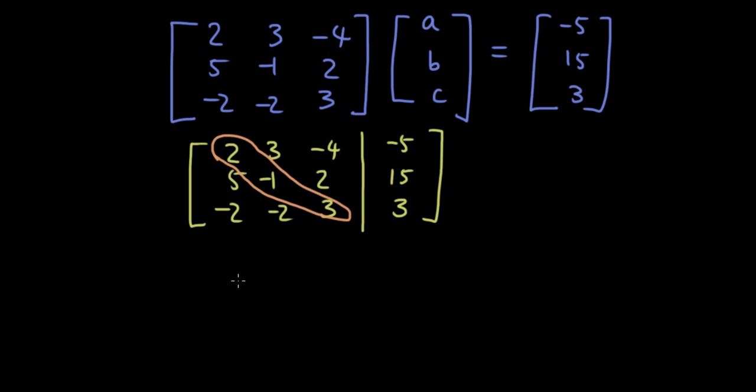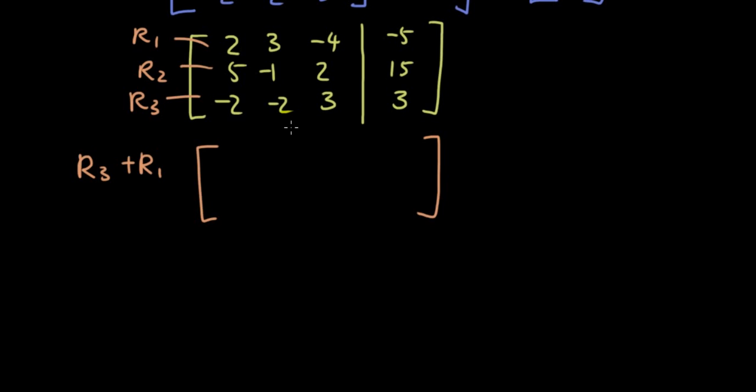So let's make this row 1, row 2, and row 3, and the first thing I'm going to do is get row 3 plus row 1. When we are working on row 3, you can just copy all the other rows down as they are. So I'm copying all of these other rows down, and then row 3 plus row 1, so negative 2 plus 2 is 0, negative 2 plus 3 is 1, 3 plus negative 4 is negative 1, 3 plus negative 5 is negative 2, so now I have a 0 down the bottom left-hand corner, so I have completed step 1.